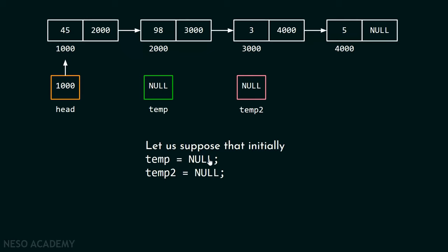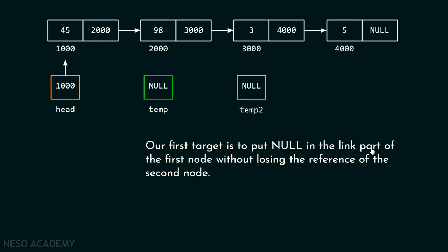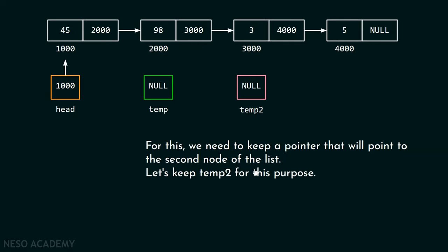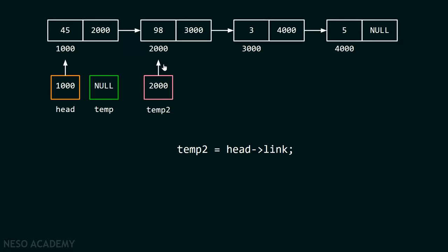Let us suppose initially temp equals null and temp2 also equals null. We have an old list with four nodes, and our task is to update it using a different method. In this new method, we only need three pointers even for four nodes. Our first target is to put null in the link part of the first node without losing the reference to the second node. We will use temp2 to point to the second node.